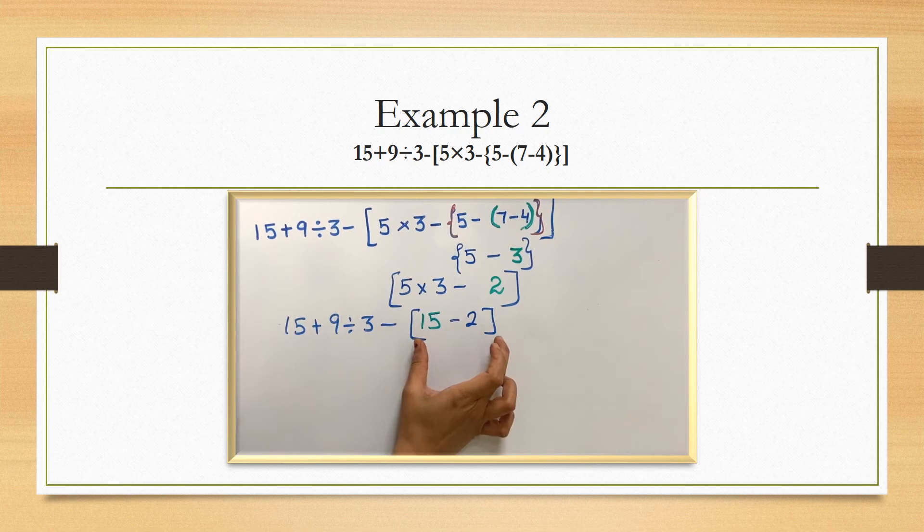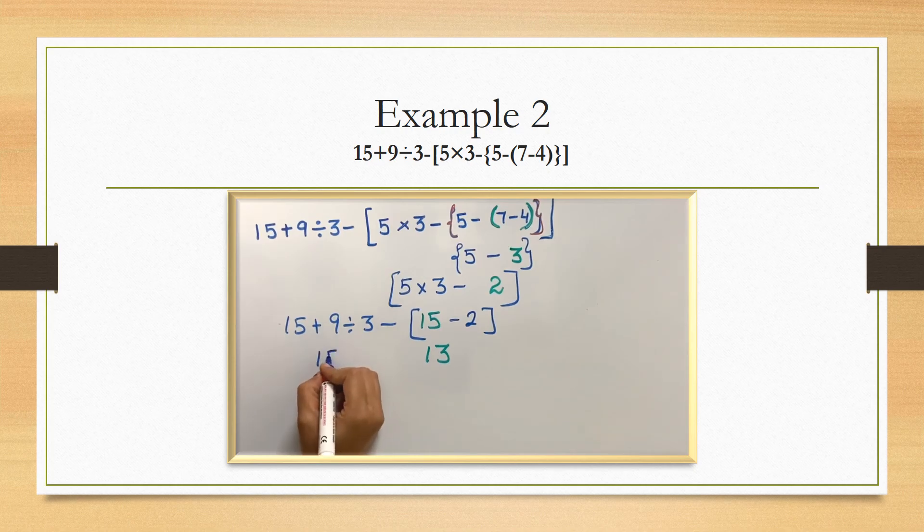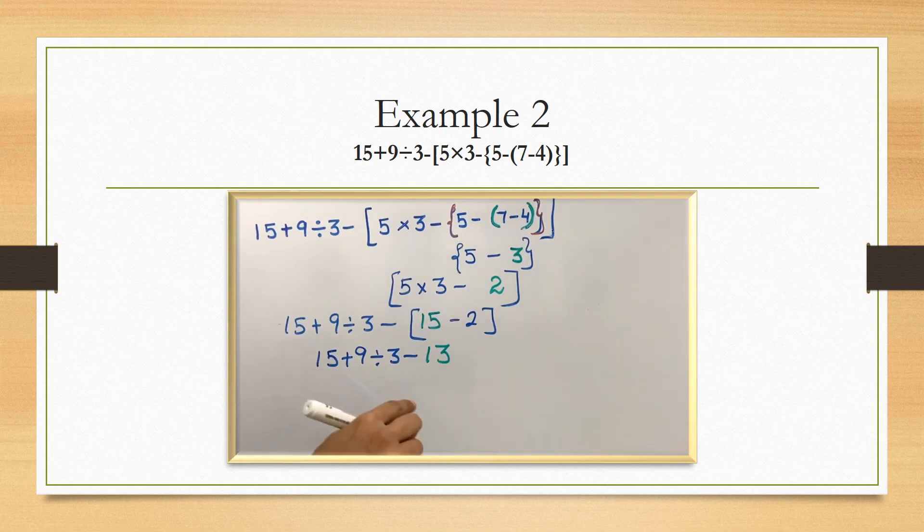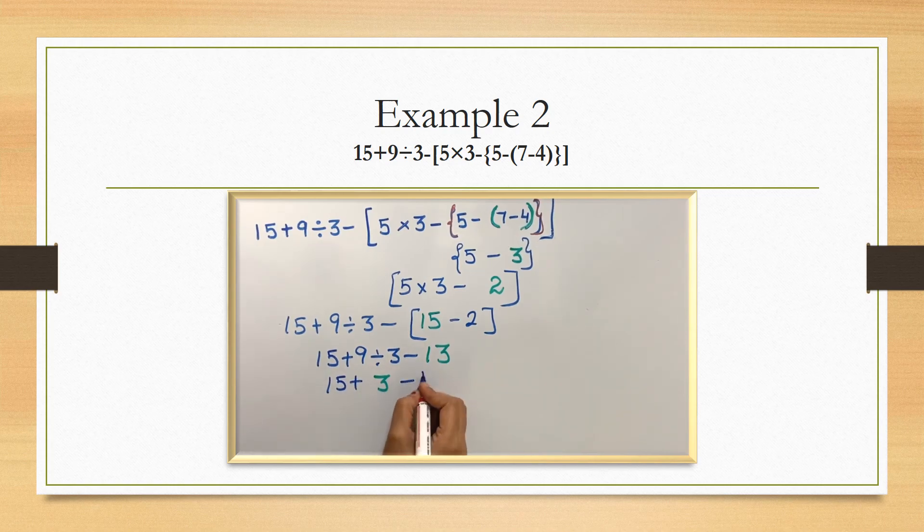The box bracket. In the box bracket, we have to do the subtraction. So 15 minus 2 is 13. We have finished the brackets. Next, we have to do division. Your division is there. So 9 divided by 3, it's 3. So we have finished the division.